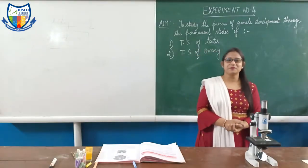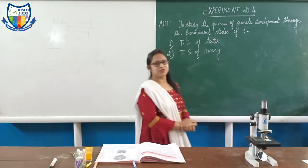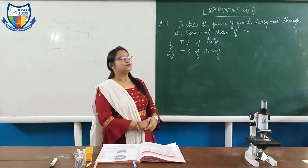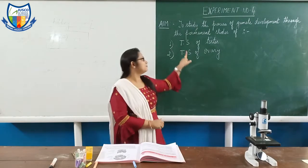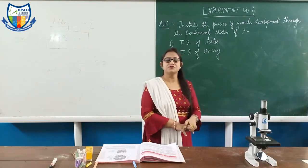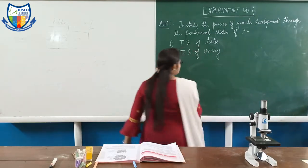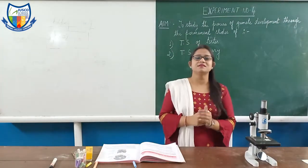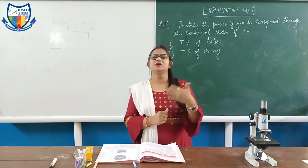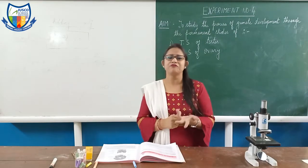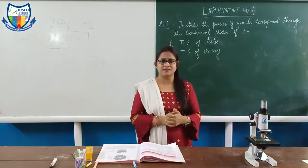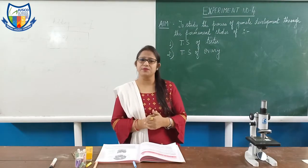Good morning students. Let us begin the fourth experiment of biology, that is to study the process of gamete development through the permanent slide of transverse section of testis and transverse section of ovary. A gamete is a sex cell or reproductive cell, whose nuclei unite together to give rise to a new individual. The production of gametes takes place in the gonads by the process called gametogenesis.